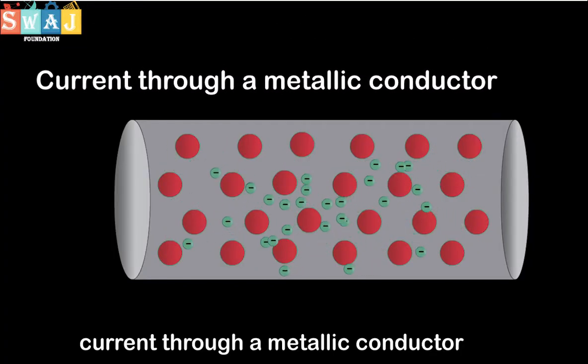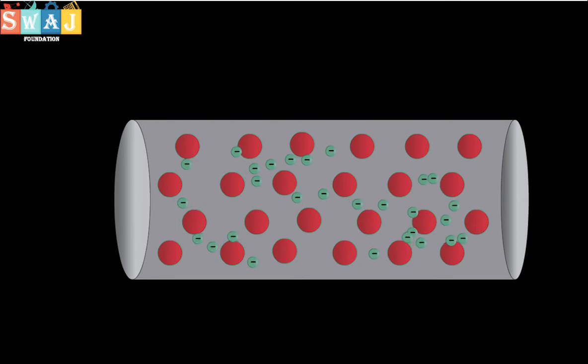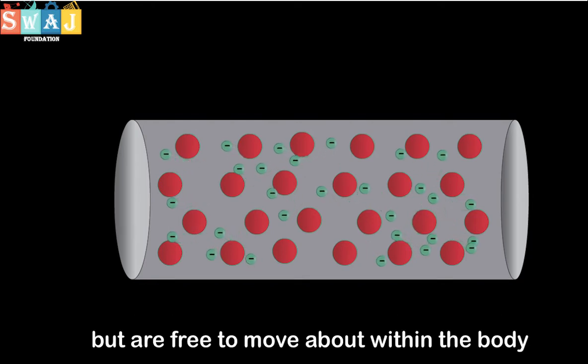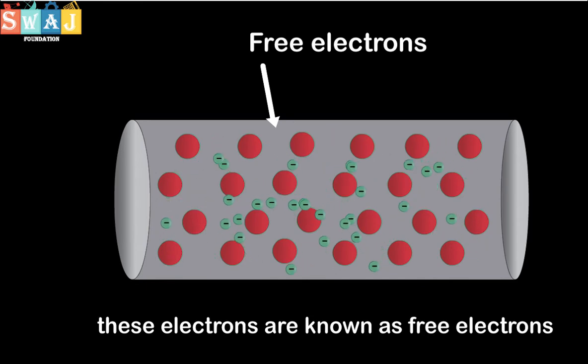Current Through a Metallic Conductor. As we know, in a metal, the valence electrons are not attached to individual atoms but are free to move about within the body. These electrons are known as free electrons.